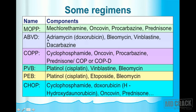Continuing ABVD: B = bleomycin, V = vinblastine, D = dacarbazine. COPP regimen is similar to MOPP, but C = cyclophosphamide replaces mechlorethamine; the rest (oncovin, procarbazine, prednisone) remain the same.